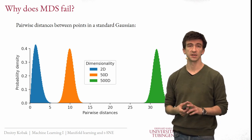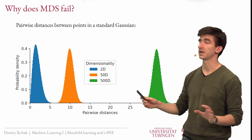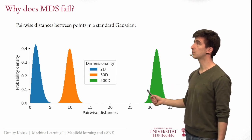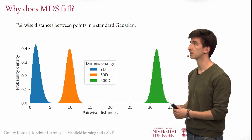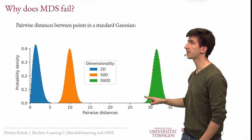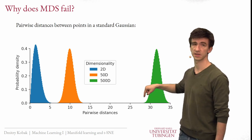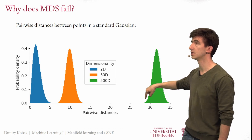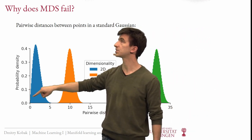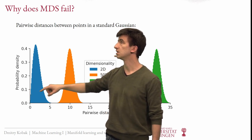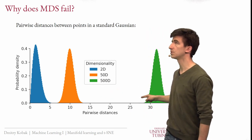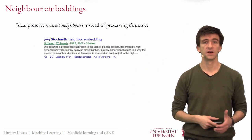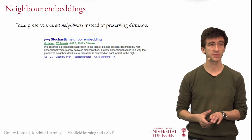The key idea of T-SNE and what I call neighbor embeddings is that we give up on preserving distances entirely — that is not possible, so let's forget about it. Instead, we aim to preserve the rank of the distance, or more specifically, we focus on the very left part of the distance distribution. We find neighbors in the high-dimensional data — pairs of points with small distance — and we want to make sure these are also neighbors in the two-dimensional embedding. We want to map this left part of the high-dimensional distribution to the left part of the 2D distribution. That is the idea behind all neighbor embedding methods.